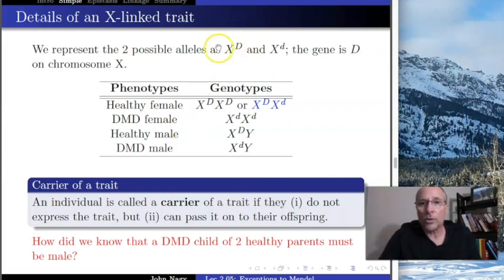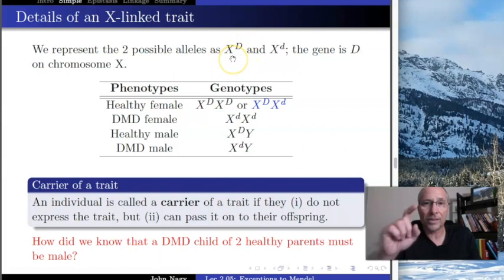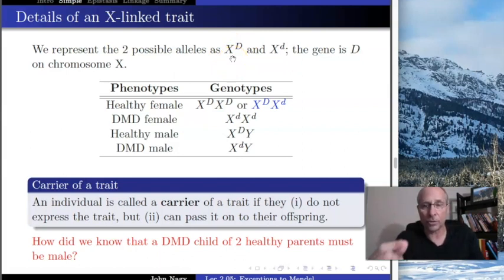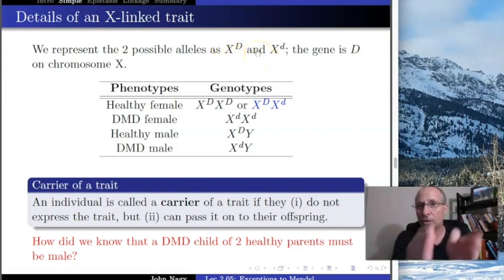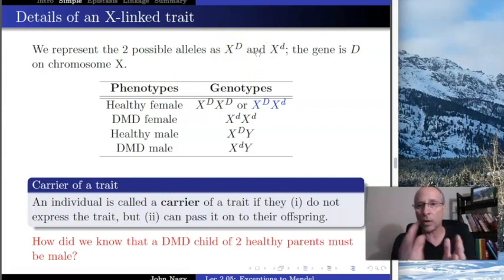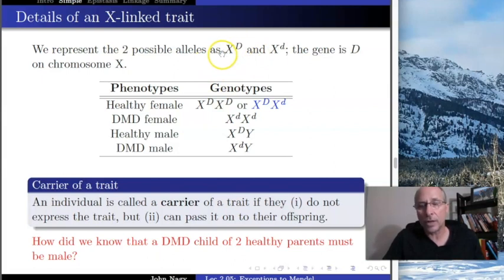When we write it, we always write the chromosome X and then put the gene as a superscript, to demonstrate that it's on the X chromosome. I will insist that we use this notation — it is the proper professional notation. Notice this X and Y notation is only used for sex-linked traits; the other traits we've discussed are on different chromosomes and don't use this notation.